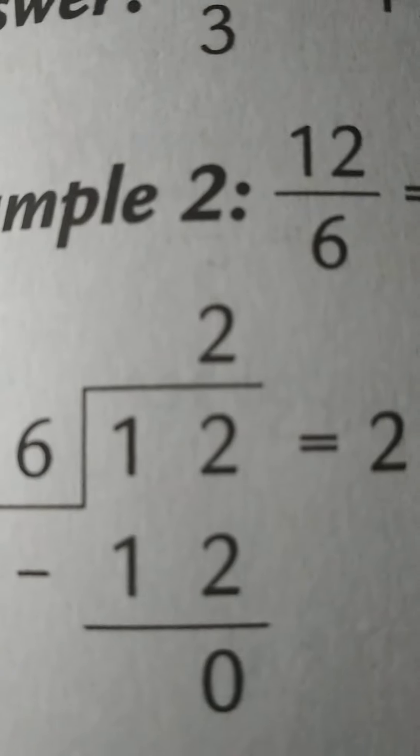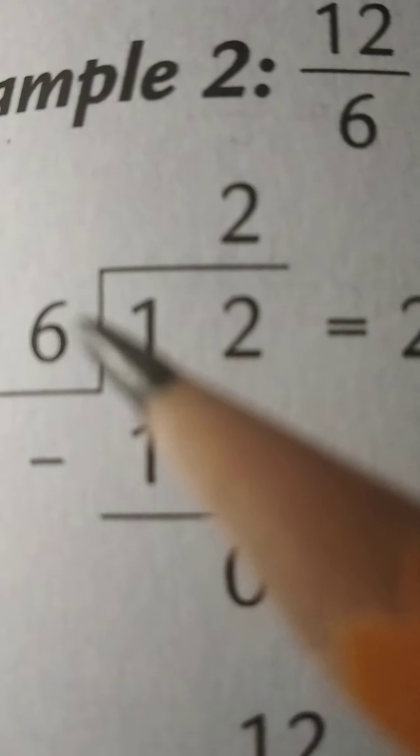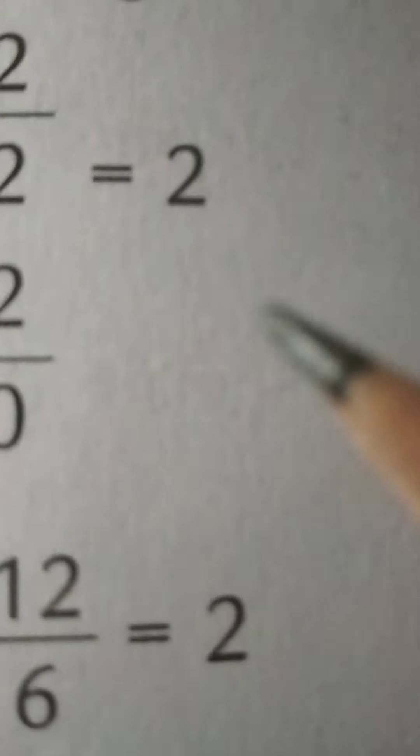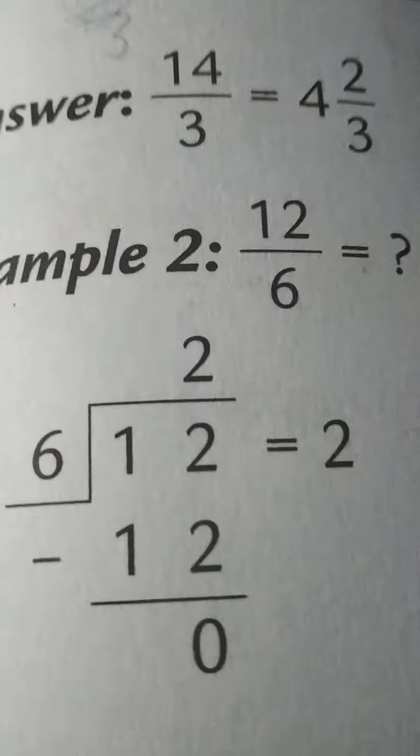12 upon 6, improper fraction. Well, it's very easy to do it because 12 divided by 6 gives us 2. So the answer is just 2 wholes.